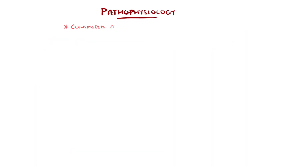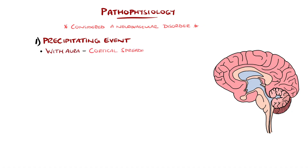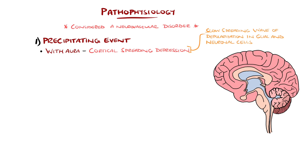Migraine has a complex pathophysiology that is not entirely understood, but is considered a neurovascular disorder whereby neurological events occur prior to and initiate the headache through interaction with meningeal vessels. It is believed to begin with a precipitating event, with a phenomenon called cortical spreading depression being key, especially in those with an aura. It is described as a slow spreading wave of depolarization in glial and neuronal cells.